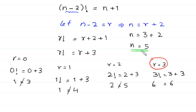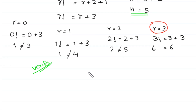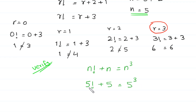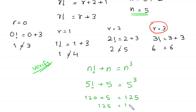Now, to verify that this value of n is correct, we put n equals 5 in the original equation: n factorial plus n equals n cubed. So 5 factorial plus 5 equals 5 cubed. 5 factorial is 120, and 120 plus 5 equals 125, which equals 5 cubed equals 125. Left hand side equals right hand side, so it is proved that the value of n equals 5 is correct.